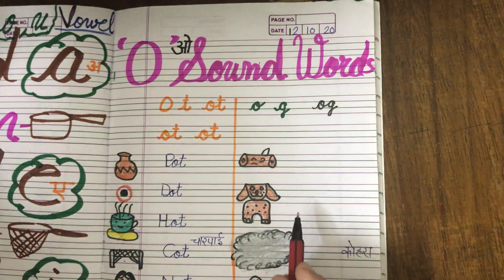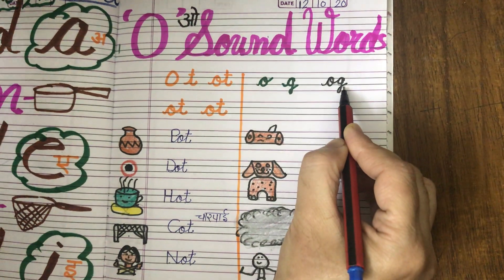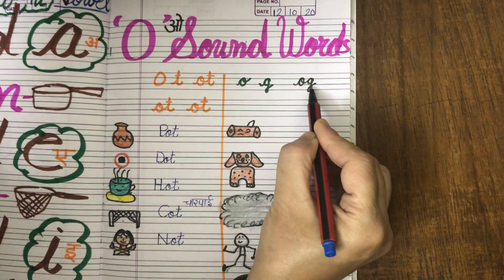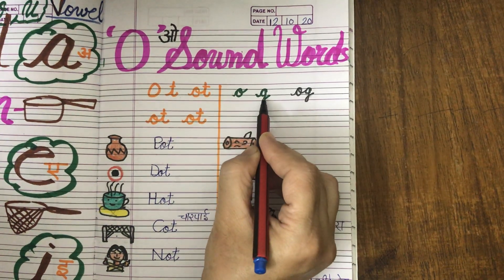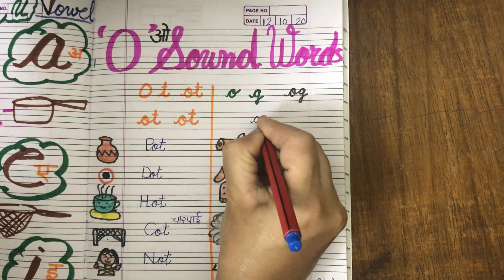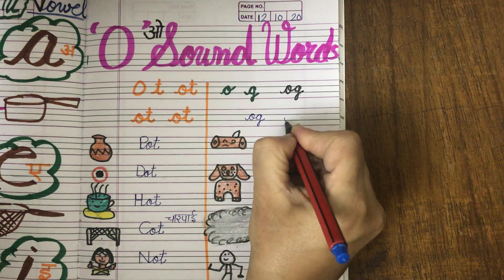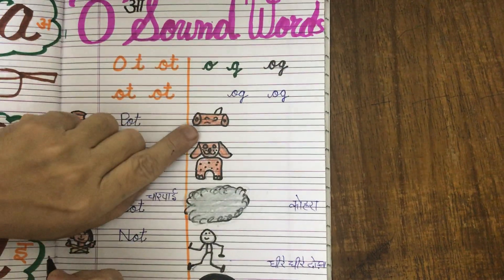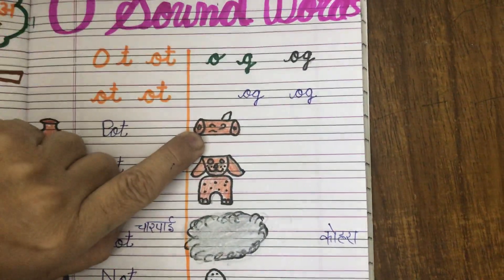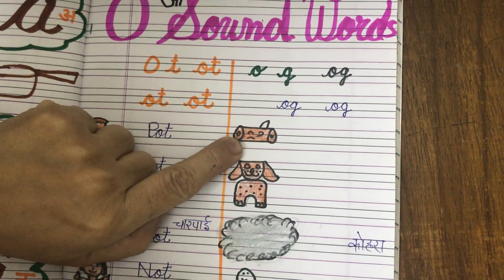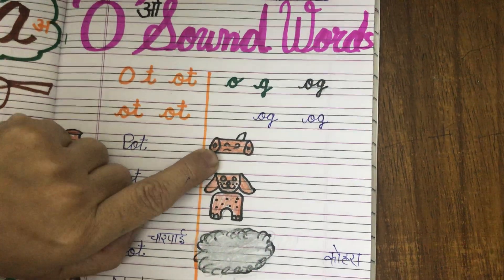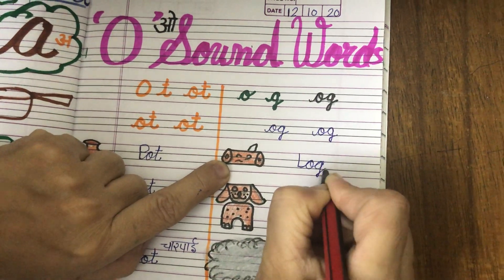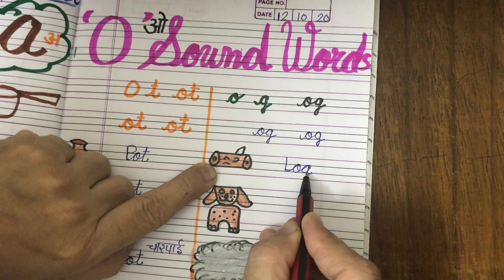Now we will write down og family words. We will make new words ending with og. O, g, og. Look at this picture. This is a log. Jho lakdi hootie na, pere se jho lakdi kerti hai, usko bolte hain log. La, og, log.